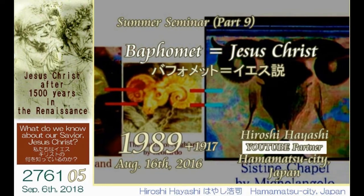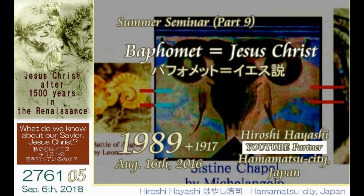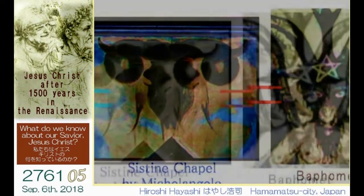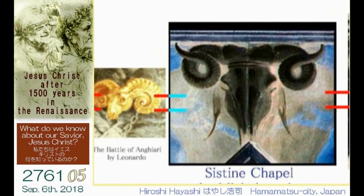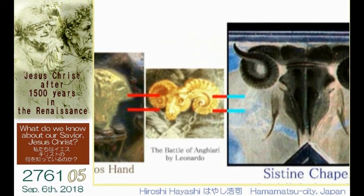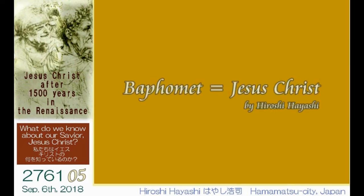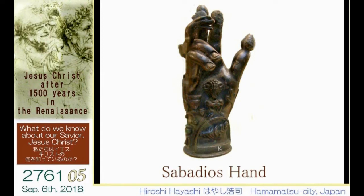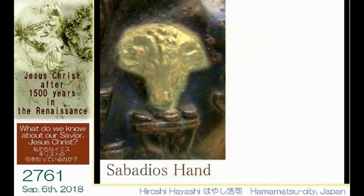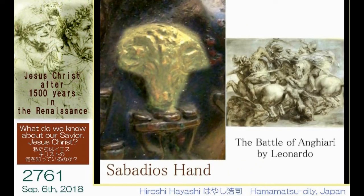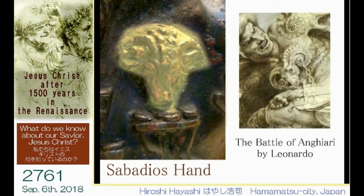The Vigilant Citizen website writes about who Baphomet is as follows: Baphomet is an enigmatic goat-headed figure found in several instances in the history of occultism. From the Knights Templar of the Middle Ages and the Freemasons of the 19th century to modern currents of occultism, Baphomet never fails to create controversy. But where does Baphomet originate from, and most importantly, what is the true meaning of this symbolic figure? I, Hiroshi Hayashi, would like to claim here that Baphomet is Jesus Christ himself, most possibly created by Jesus himself after 1500 years in the Renaissance era.